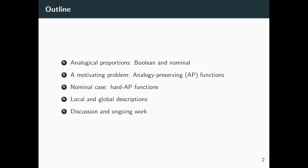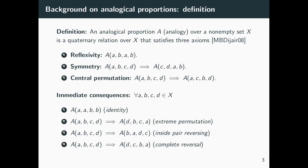To give an outline of this talk: we will start by recalling basic notions of analogies, focusing on the boolean and nominal settings of analogical proportions. Then we discuss a motivating problem — dataset augmentation — which motivates the notion of analogy preserving functions. We then focus on the nominal case, define the so-called hard analogy preserving functions, provide local and global descriptions of these functions, and conclude with discussion and ongoing research work.